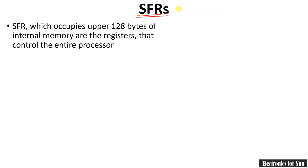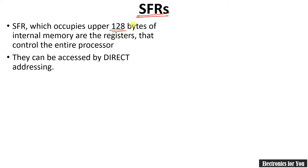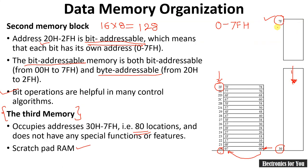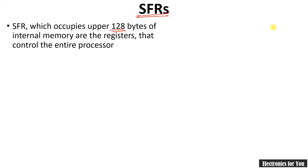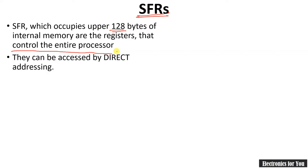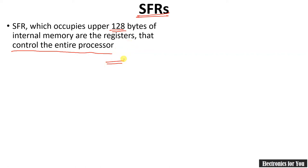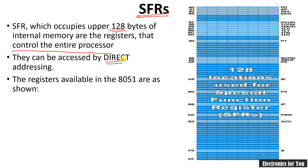The fourth block is the Special Function Registers, or SFR. SFRs occupy the next 128 bytes — from 80h to FFh — and they control the entire processor. For control operations, SFRs are very important. They can be accessed by direct addressing. The registers in this block start from 80h; after the third block ended at 7Fh, the next address is 80h.